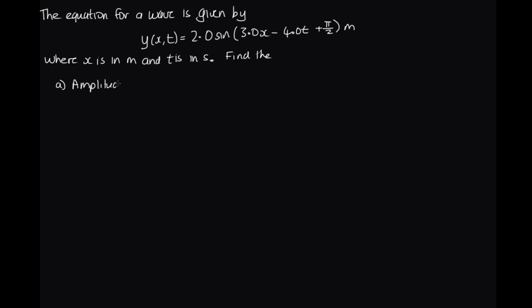Find the: a) amplitude, b) frequency, c) wavelength, d) speed, and e) initial height at x = 1.0 meter.